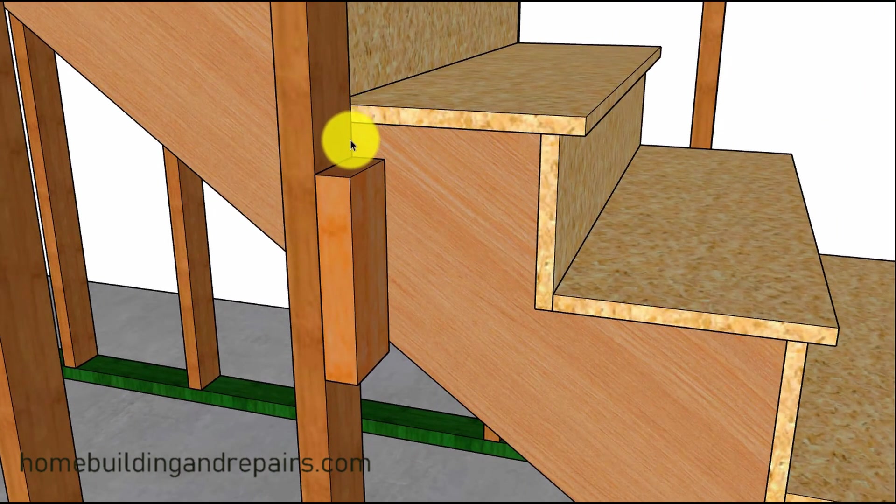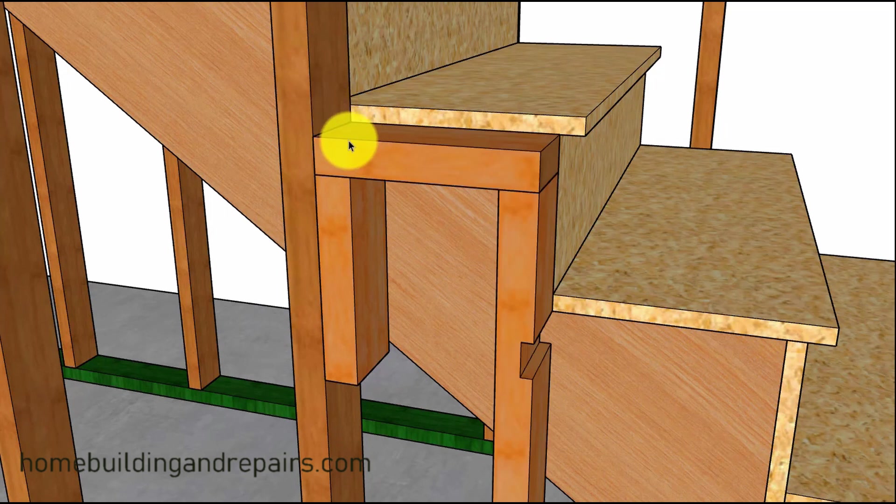So an inch and a half or the thickness, whatever the thickness is of the top board here you're going to use. So if you're going to use a 1x for something like this, make sure this is three quarters of an inch lower. So I think you get the point here.